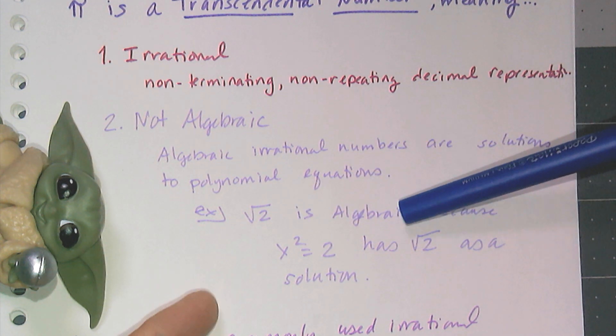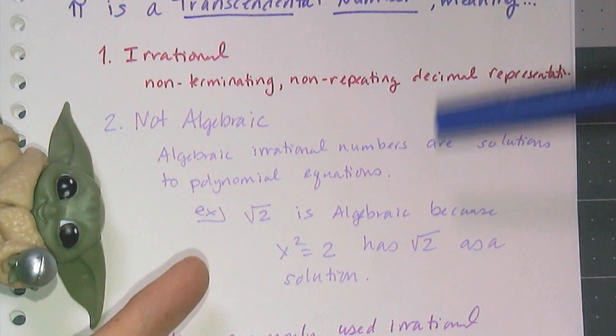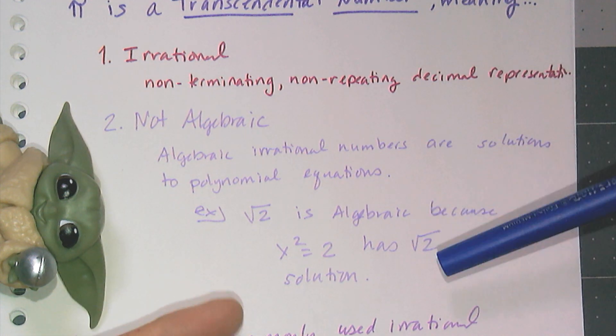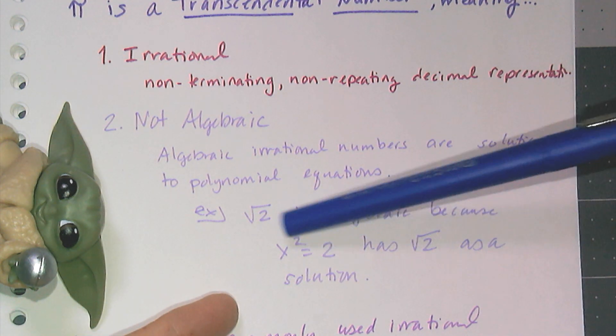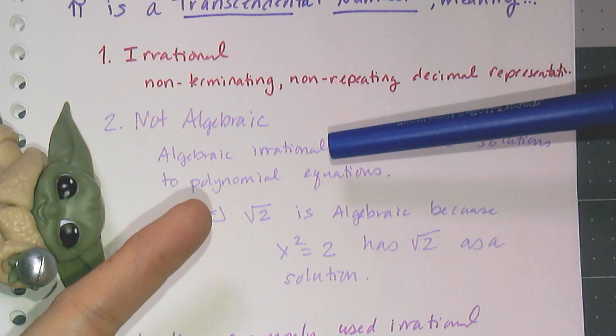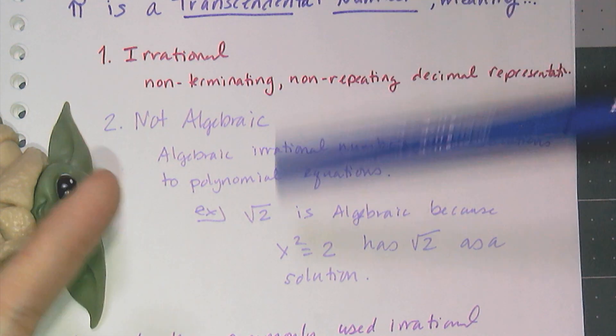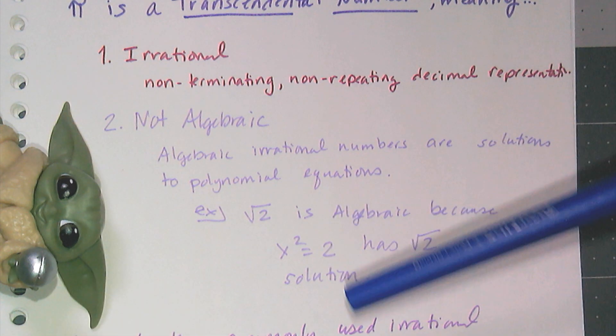An algebraic number is a number that is a solution to a polynomial equation with integer coefficients. So basically, the square roots, the cube roots, the fourth roots—those are examples of algebraic irrational numbers. For example, the square root of 2 is an algebraic irrational number. It's a non-terminating, non-repeating decimal, but it is created by the equation x squared equals 2. The square root of 2 is a solution to this equation, and that's what makes it algebraic. Pi, on the other hand, you cannot create a polynomial equation with integer coefficients that has an answer that's pi. That's what makes it transcendental.